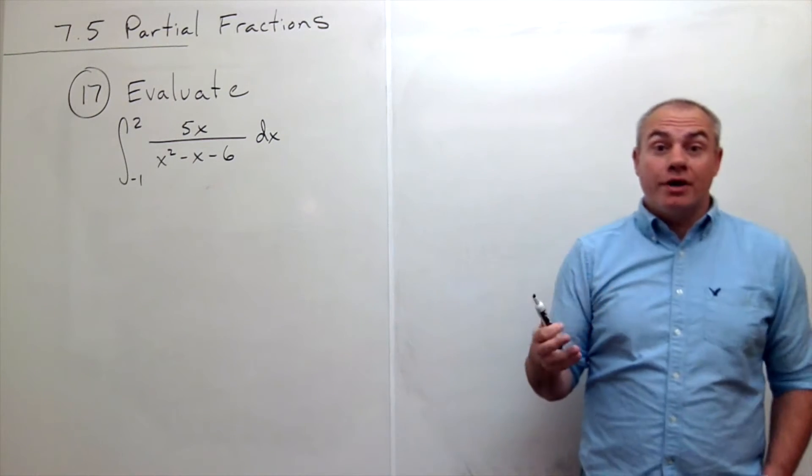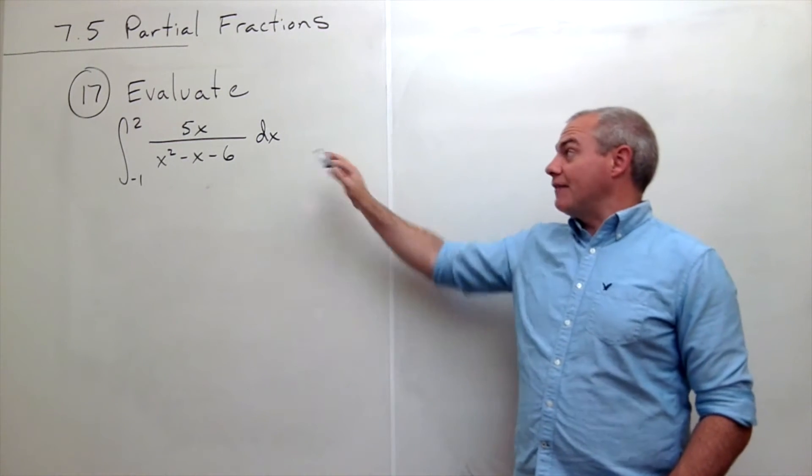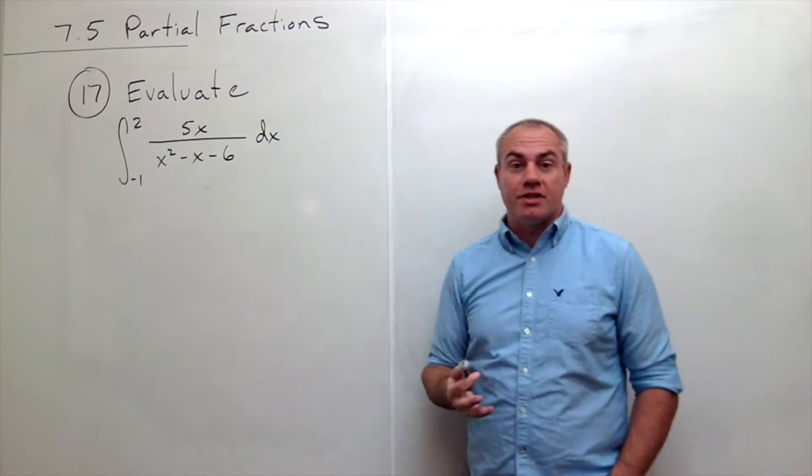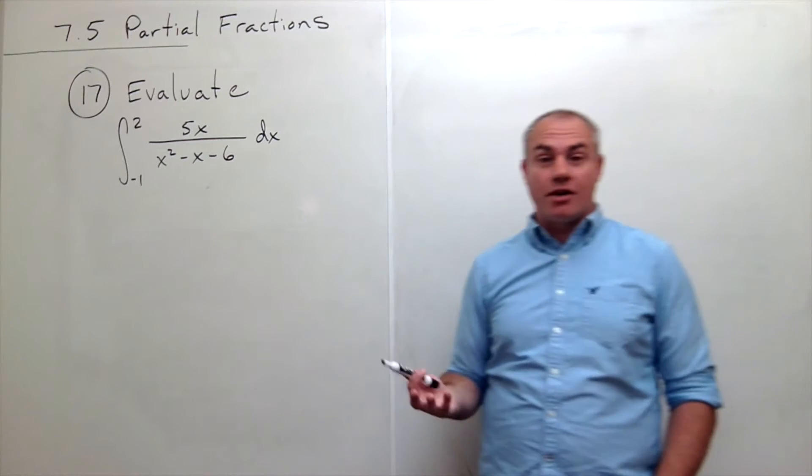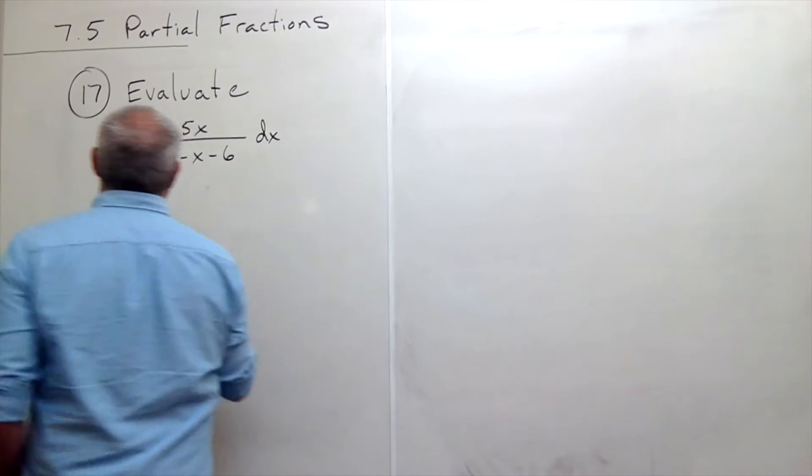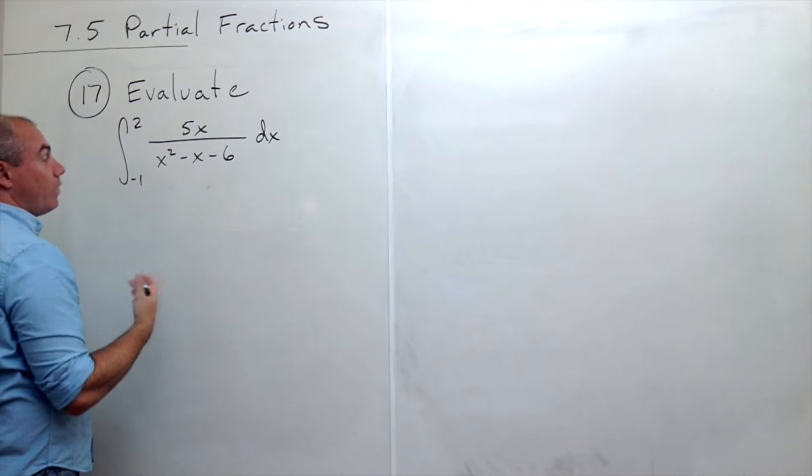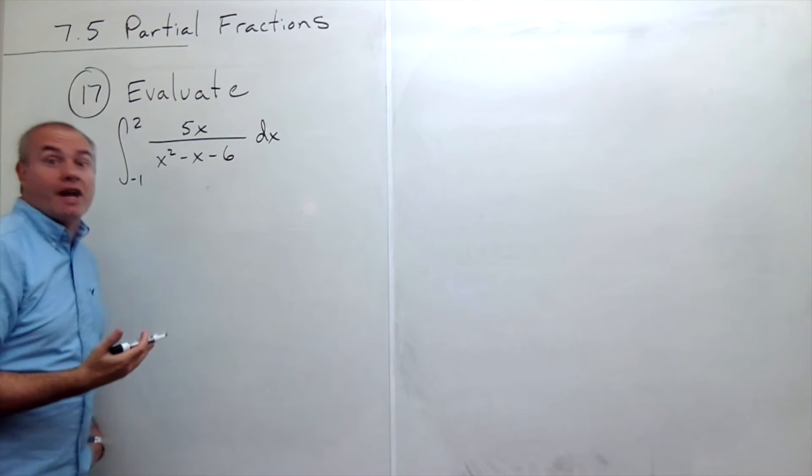Alright, so we're going to take this definite integral using partial fractions. So the first thing that I'd like to do is let's completely factor the denominator. So I'm going to rewrite this thing. Let's ignore that we're taking an integral right now. We're just going to break it up into partial fractions first.